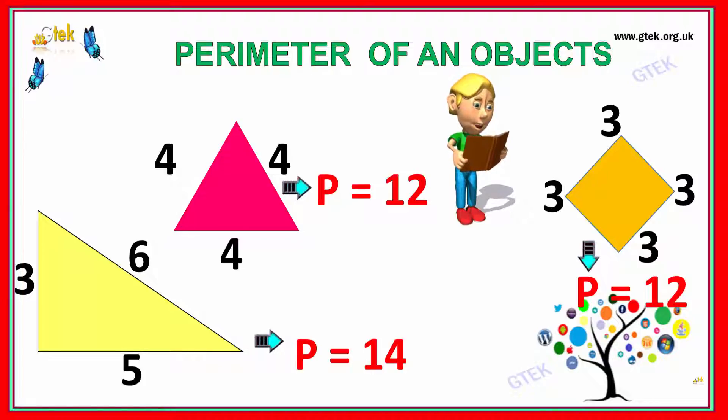This is how the perimeter is calculated. You can see a triangle with sides of 4, 4. It's a kind of equilateral triangle. Equilateral triangles have sides of equal length. So the perimeter is 12: 4 plus 4 plus 4 equals 12.